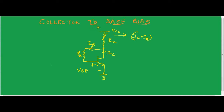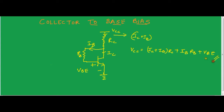This is the circuit of collector to base bias. As you can see, there is an NPN transistor and base resistor RB. Then there is a resistor in the collector RC, and there is a battery VCC. Let's apply KVL to this circuit. We will get VCC is equal to (IC plus IB) into RC, plus IB times RB, plus VBE. So this is the KVL equation.